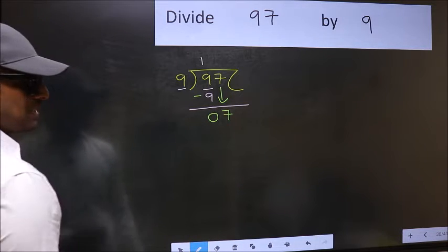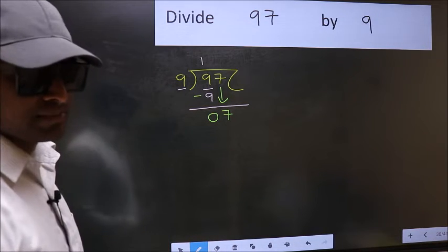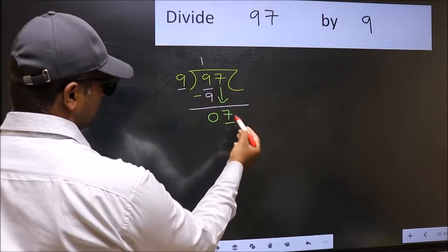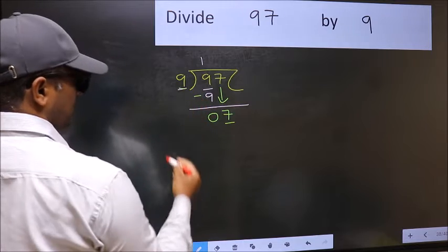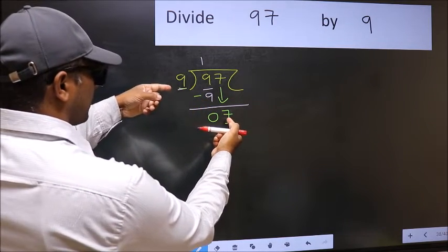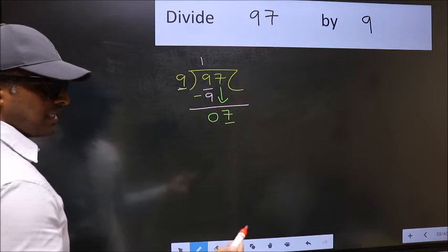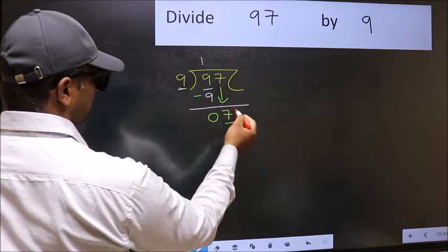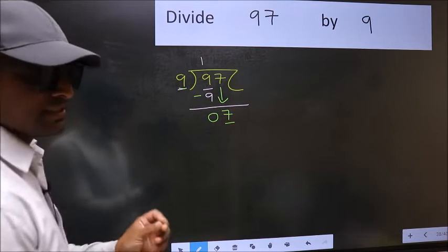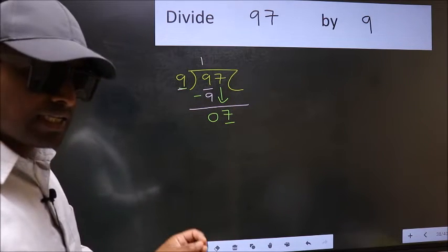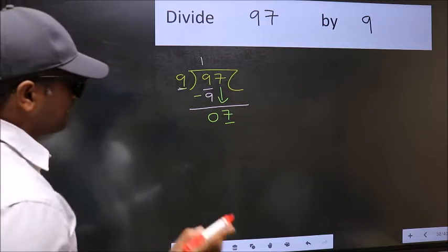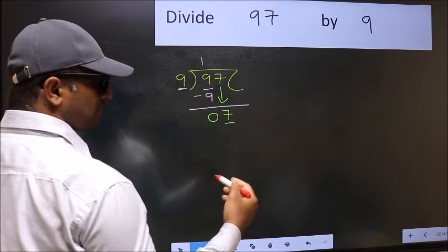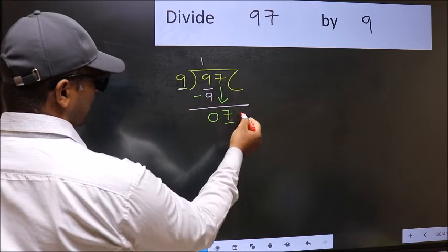After this step, the mistake happens. And the mistake is this: here we have 7 and here 9. 7 is smaller than 9, so what many do is they directly put a dot and take 0. Which is wrong.